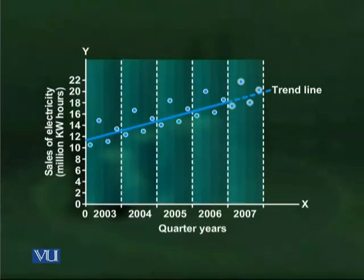We took a hypothetical example of electricity sales in a city for the period 1992 to 1995. The data was quarterly data. The time period covers four consecutive years — 1992, 1993, 1994, and 1995 — and we assigned codes to the quarters starting from 1.